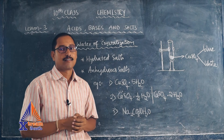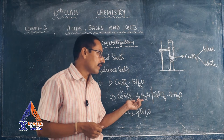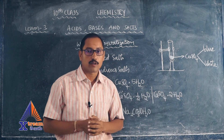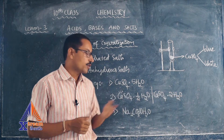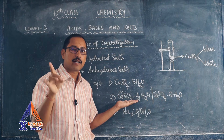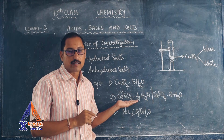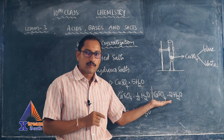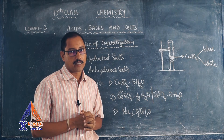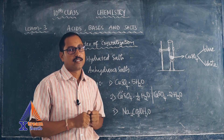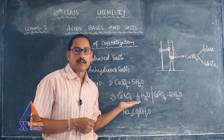Plaster of Paris consists of half a molecule of water. When one and a half molecules of water are added, half plus one and a half becomes two molecules of water, and then it is called gypsum. Once it converts into gypsum it becomes tough and cannot be brought back to Plaster of Paris.